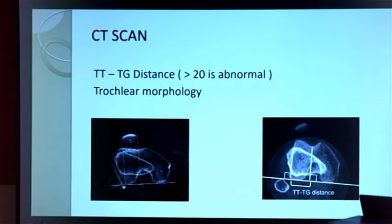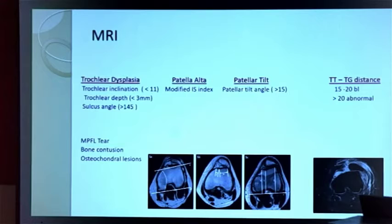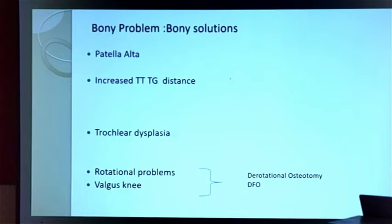I usually get a combined scan for almost all my patients with patella instability. I always order both CT and MRI because TTTG distance is more reliable on CT scan — if TTTG is more than 20, it is abnormal. MRI helps with trochlear dysplasia, patella alta, patella tilt, TTTG distance, and MPFL tear. When requesting the combined scan, ask your radiologist to include: TTTG distance, patella alta, trochlear depth and index, patella tilt, sulcus angle, MPFL, and osteochondral lesion.